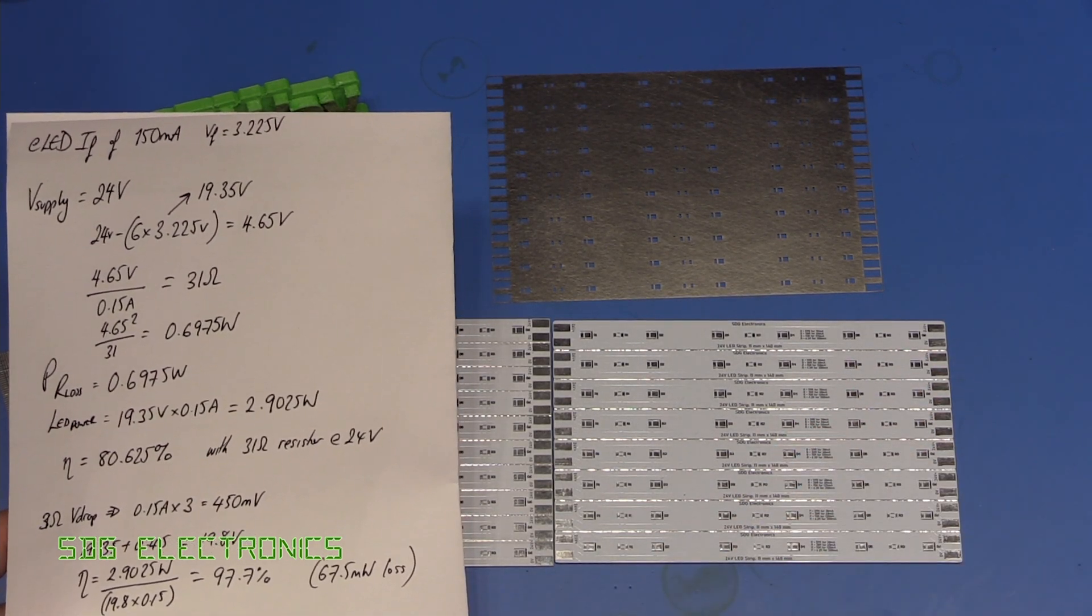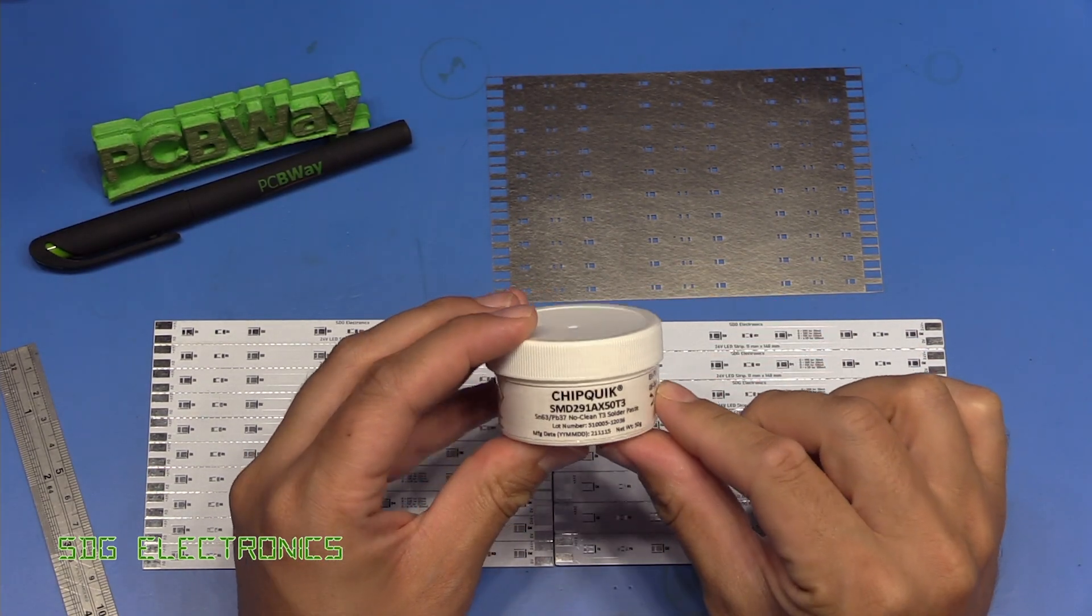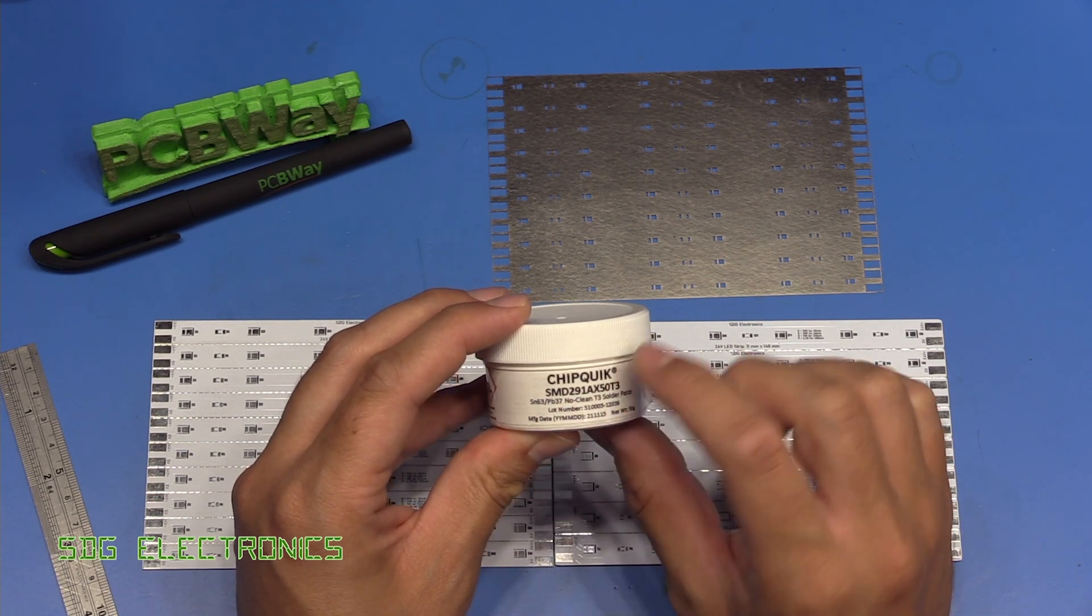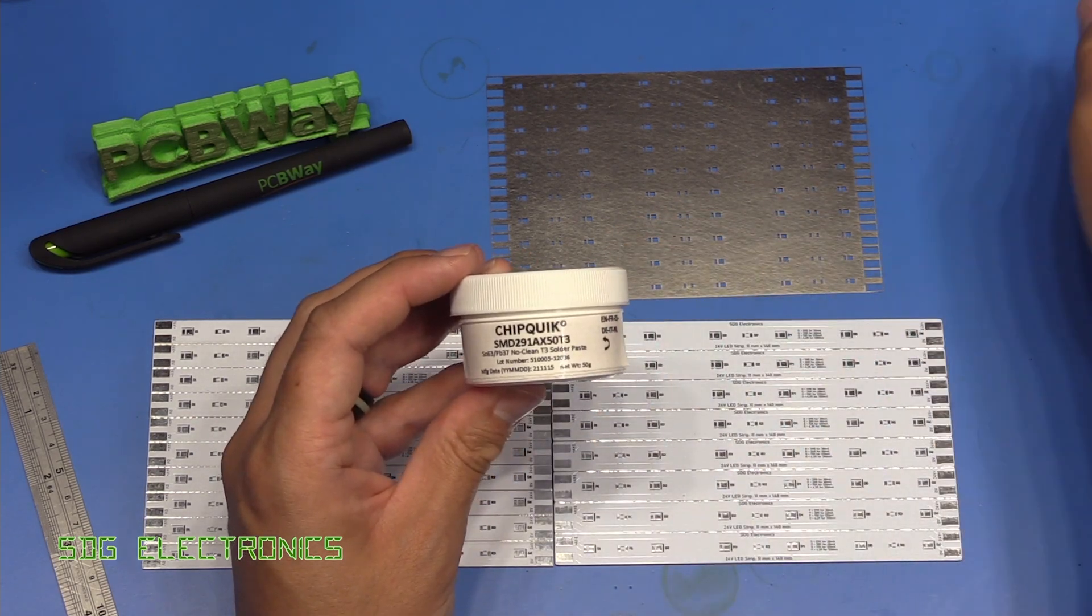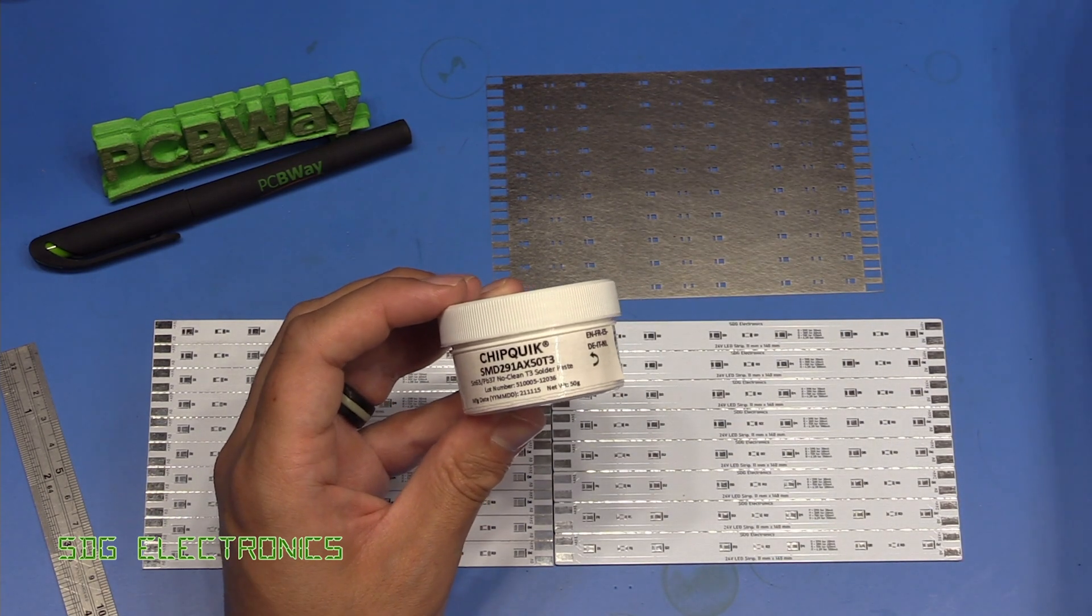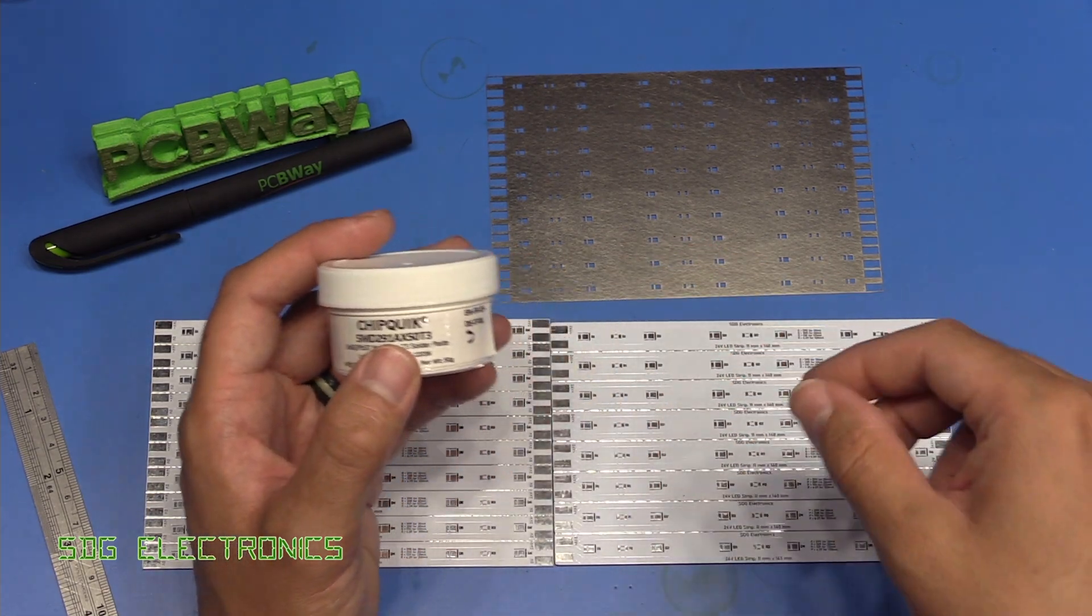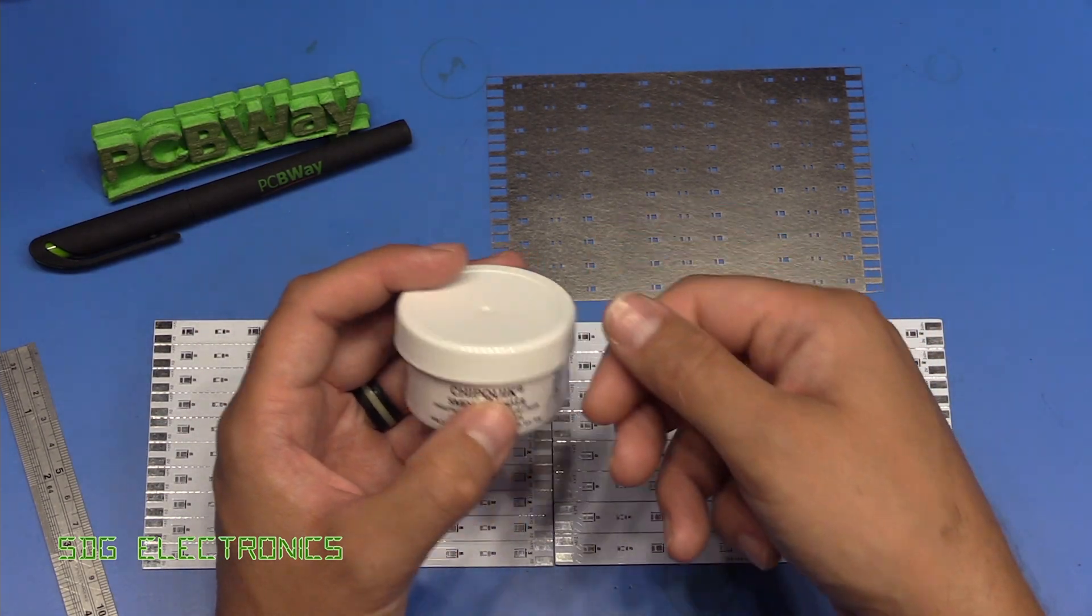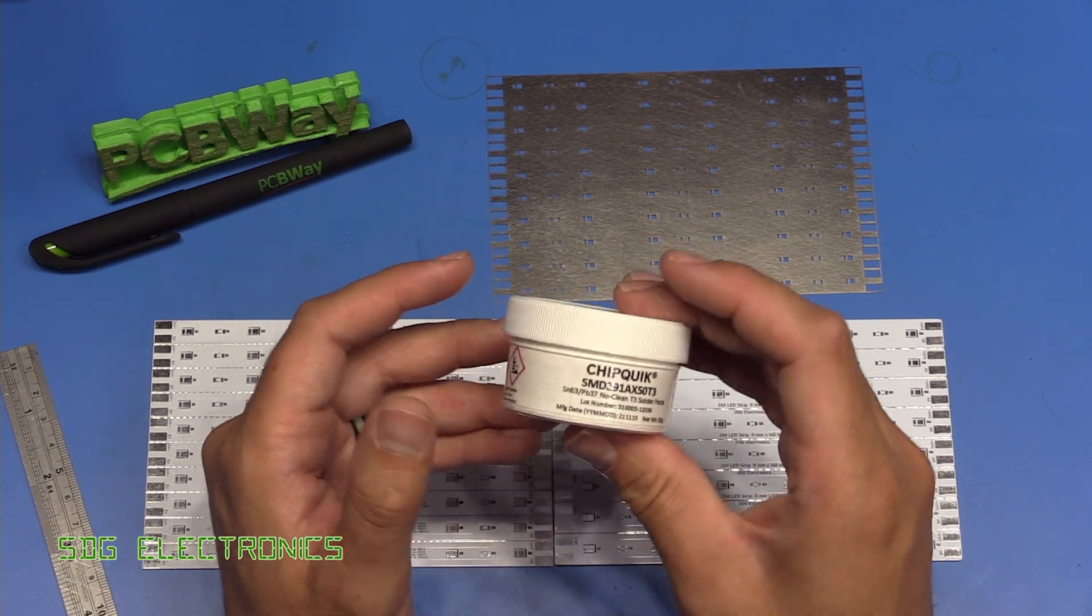To assemble these PCBs we're going to be using this ChipQuik solder paste. This is a lead-based 63/37 eutectic mix. I actually ran out of solder king paste and this was available next day from RS. The part number is RS 1466191, relatively inexpensive. It comes in a tub which I much prefer because with the syringe when you're assembling PCBs if you end up with excess you can't get it back in the syringe whereas you can just wipe it back into the tub and use it next time.